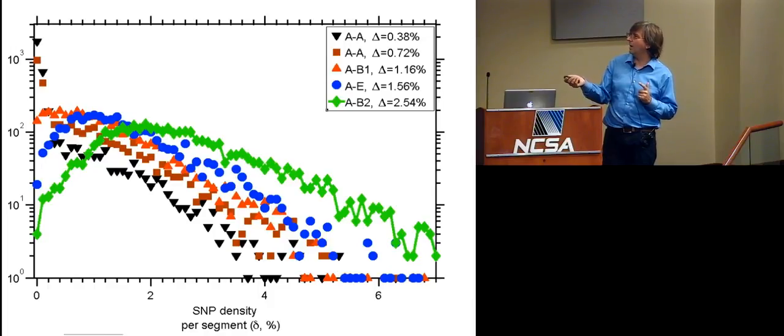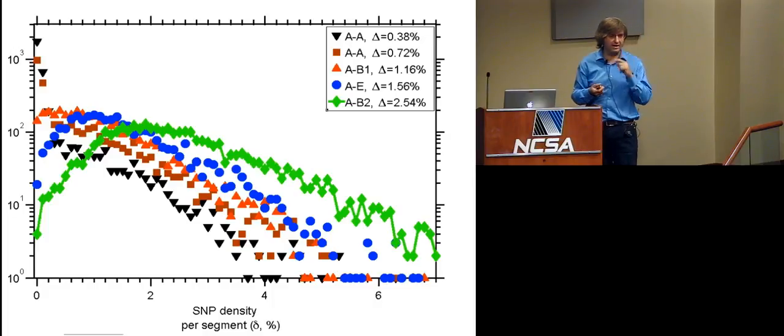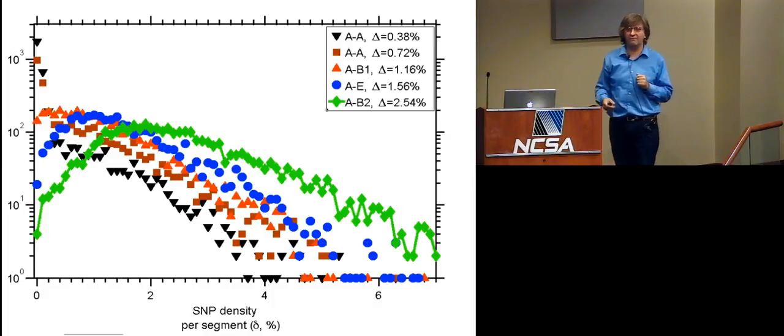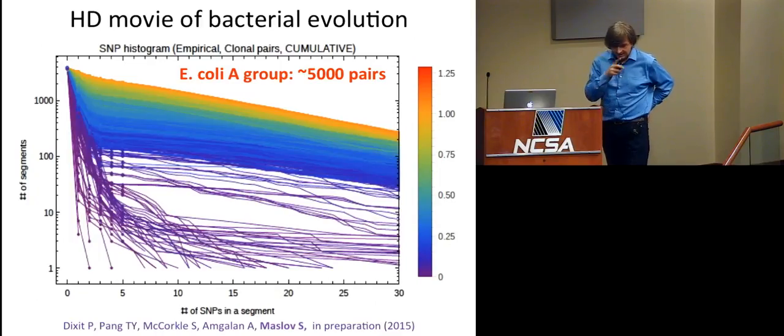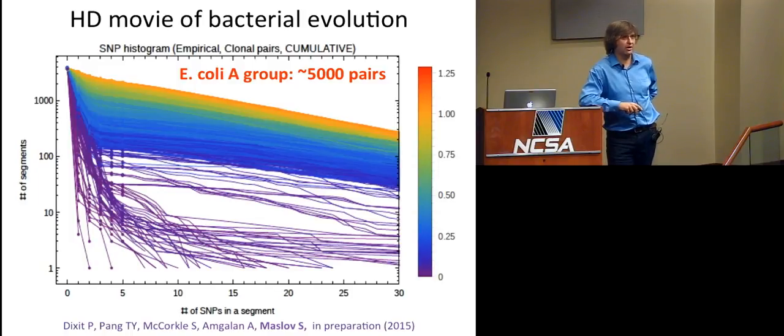And then after this, you're just basically keep covering genomes which are already covered by horizontally transferred segments to cover them more and more. And that goes on for a while until at this level of divergence, 2.5% divergence on average, genome-wide average, you run out of sequences which people call E. coli. And then after this, it stops being E. coli and starts being another species. Okay?